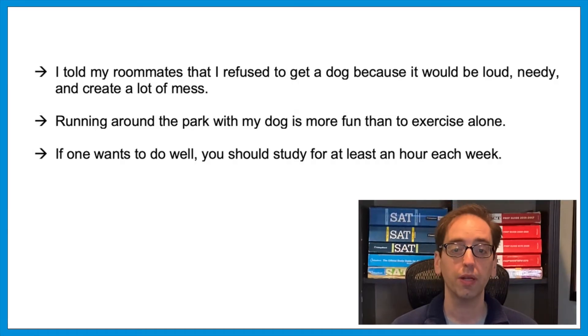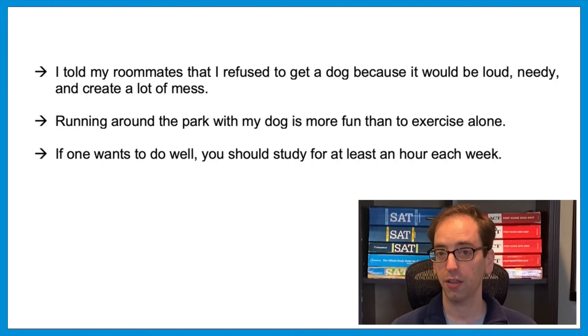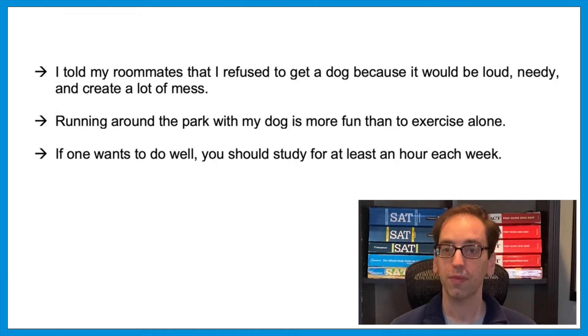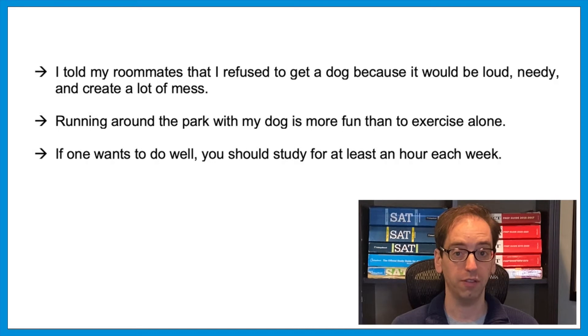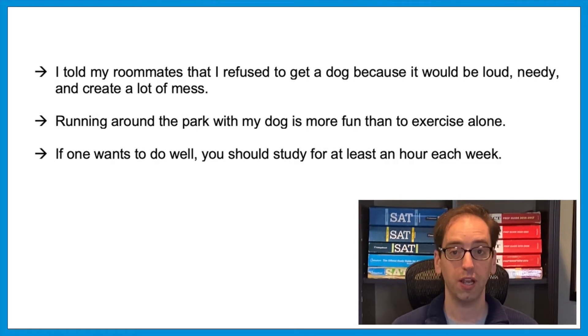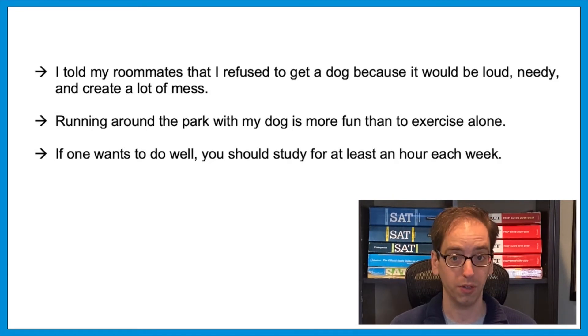Let's look at three different sentences that each have an error. Think about why each is wrong. The first one: 'I told my roommates that I refused to get a dog because it would be loud, needy, and create a lot of mess.' The dog would be adjective, adjective, and then a verb phrase — that ruins the flow. It should say the dog would be loud, needy, and messy. Now we have all adjectives to describe the dog.